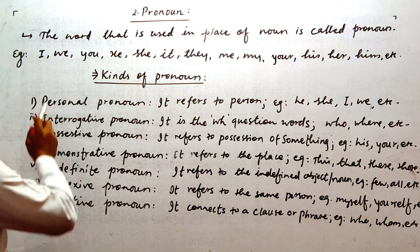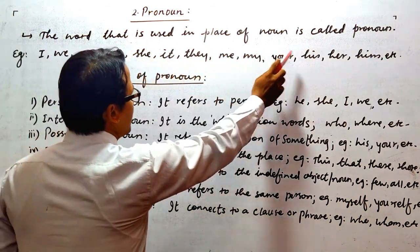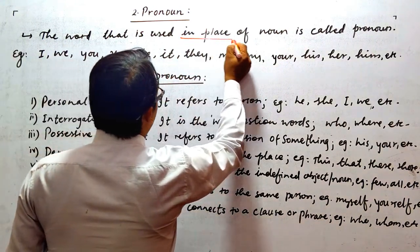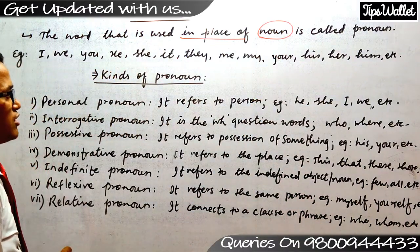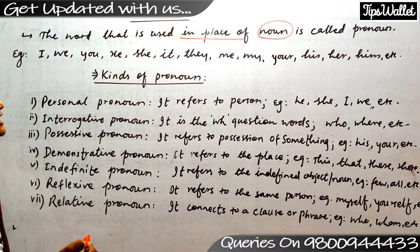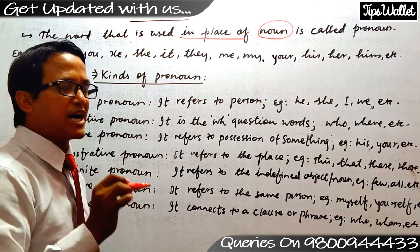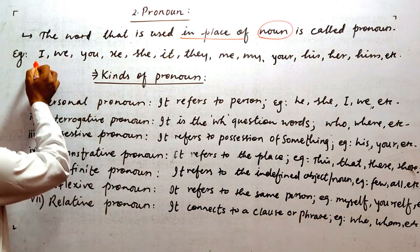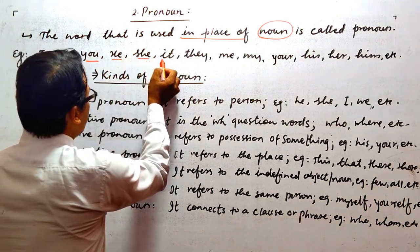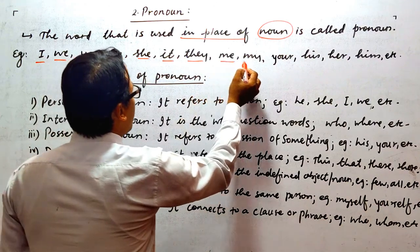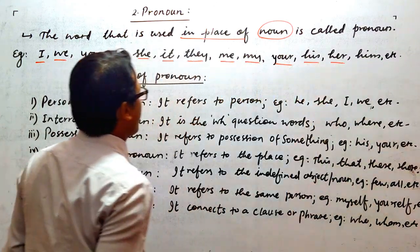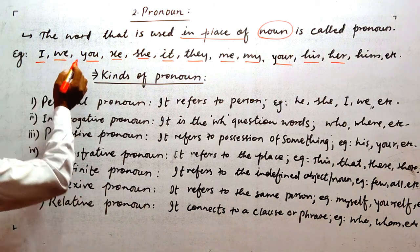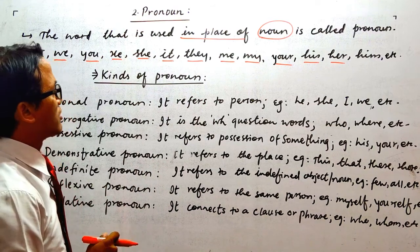What is pronoun? The word that is used in place of noun is called pronoun. As you discussed previously in parts of speech, the words that are used in place of noun are like I, we, you, he, she, it, they, me, my, your, his, her, etc. So these are pronouns. These words are used in place of noun.